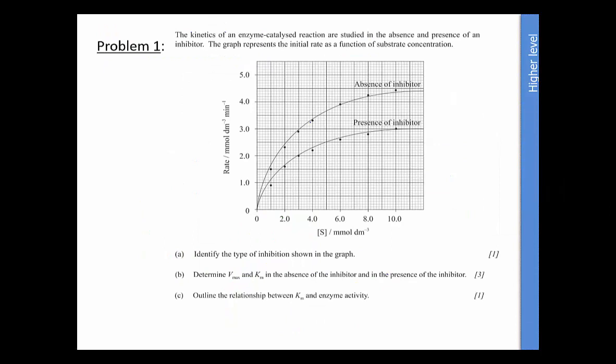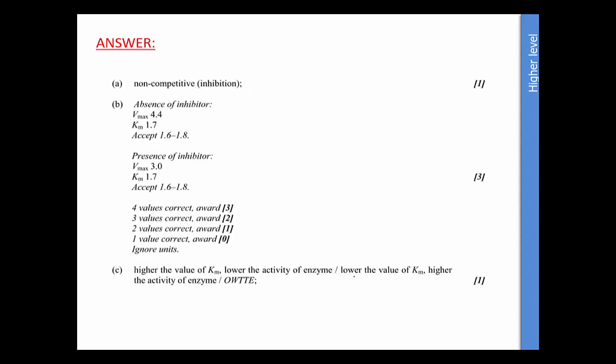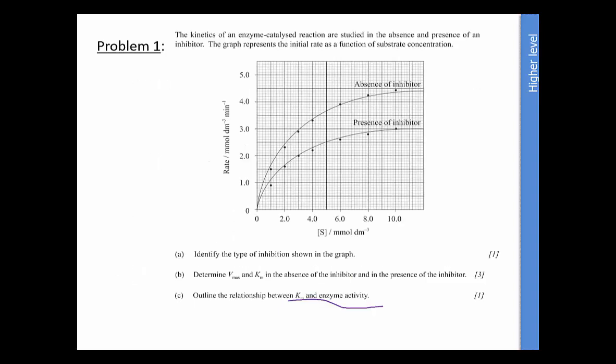So here is a very typical question. Identify the type of inhibition, give these two values and outline the relationship between Km and enzyme activity. Very common questions. So I don't have a full answer here. So if you look at the previous slide, it must be non-competitive because it doesn't ever, no matter how much you increase the computation, it doesn't get back to normal. And so the Vmax, in the absence of the inhibitor, you're going to have to draw a line across here and hope for accuracy. And so I would go about 4.4 here and use the correct units.